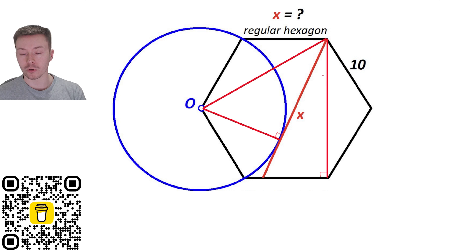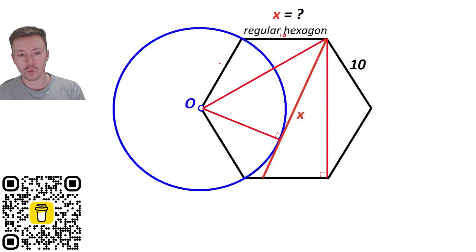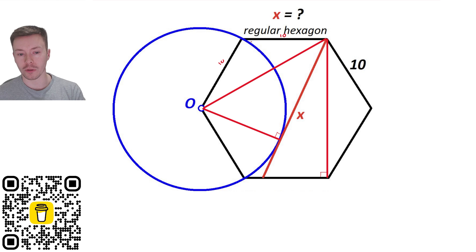It comes down to whether we can work out this introduced side at the top left and the vertical on the right-hand side. Actually, because it's a regular hexagon, we can — it all has side length 10. The interior angles of a hexagon can be worked out using the formula (n minus 2) times 180, divided by the number of sides.